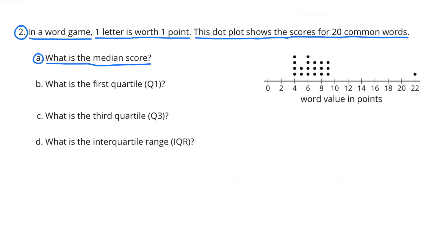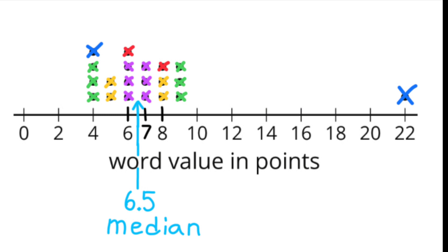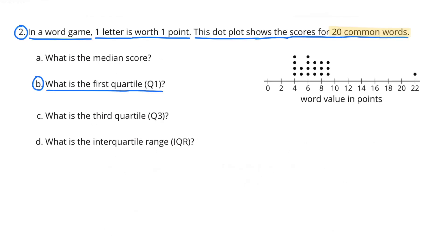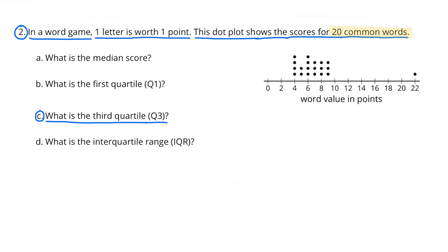Number two: in a word game, one letter is worth one point. This dot plot shows the scores for 20 common words. Part A: what is the median score? The median score is 6.5. Part B: what is the first quartile, or Q1? The first quartile is 5.